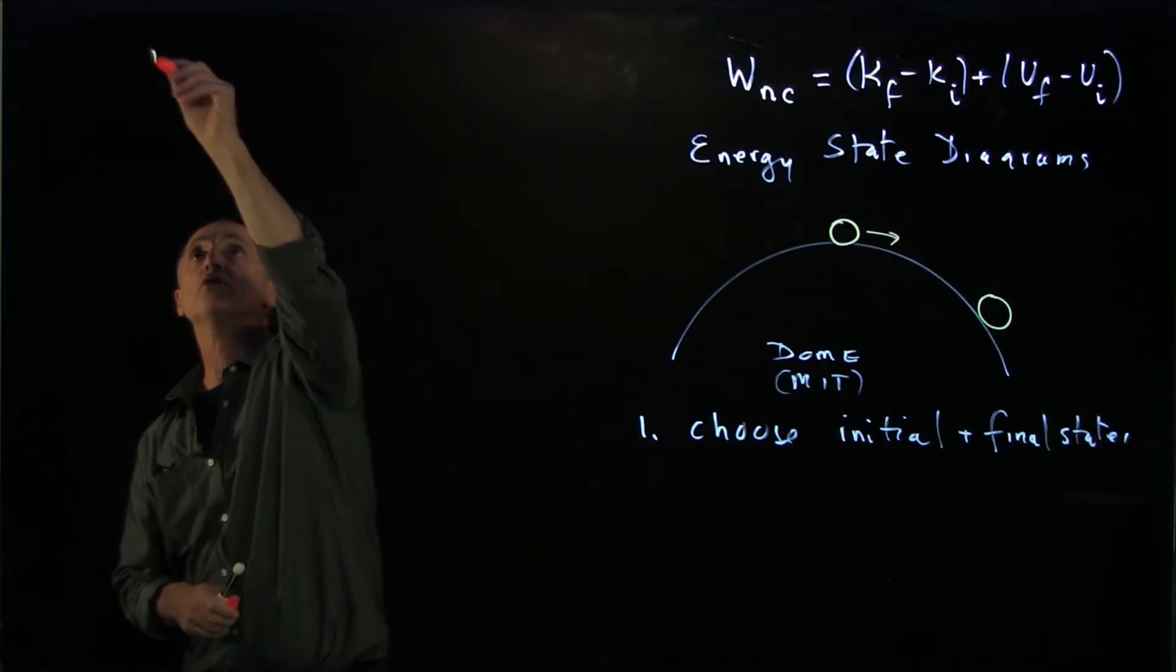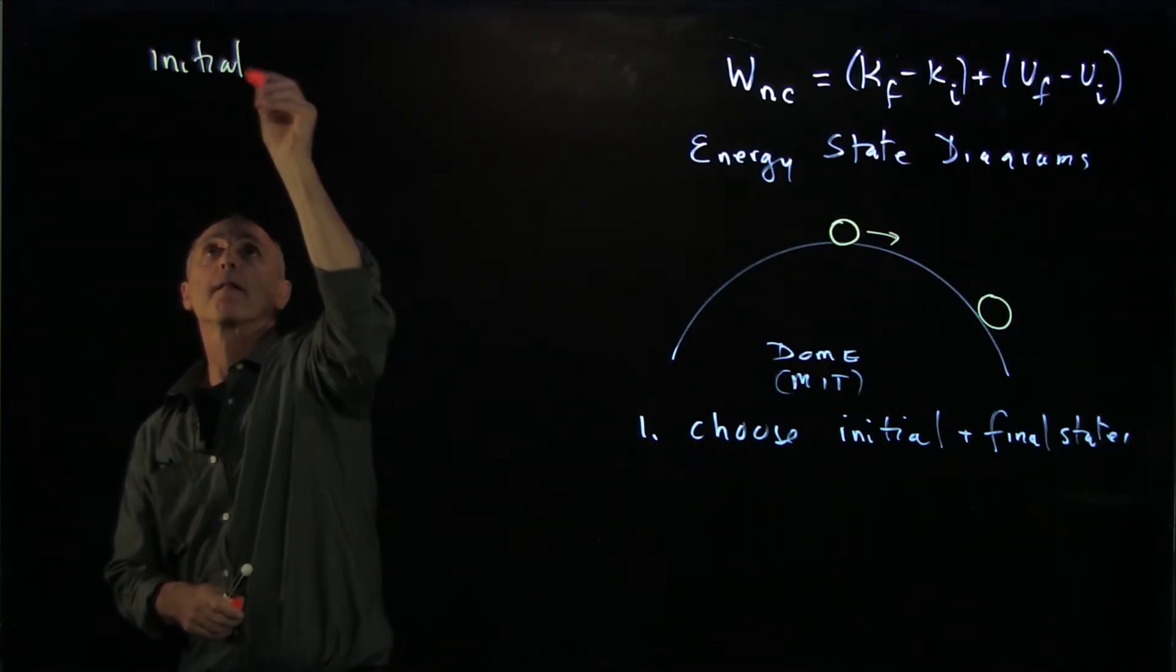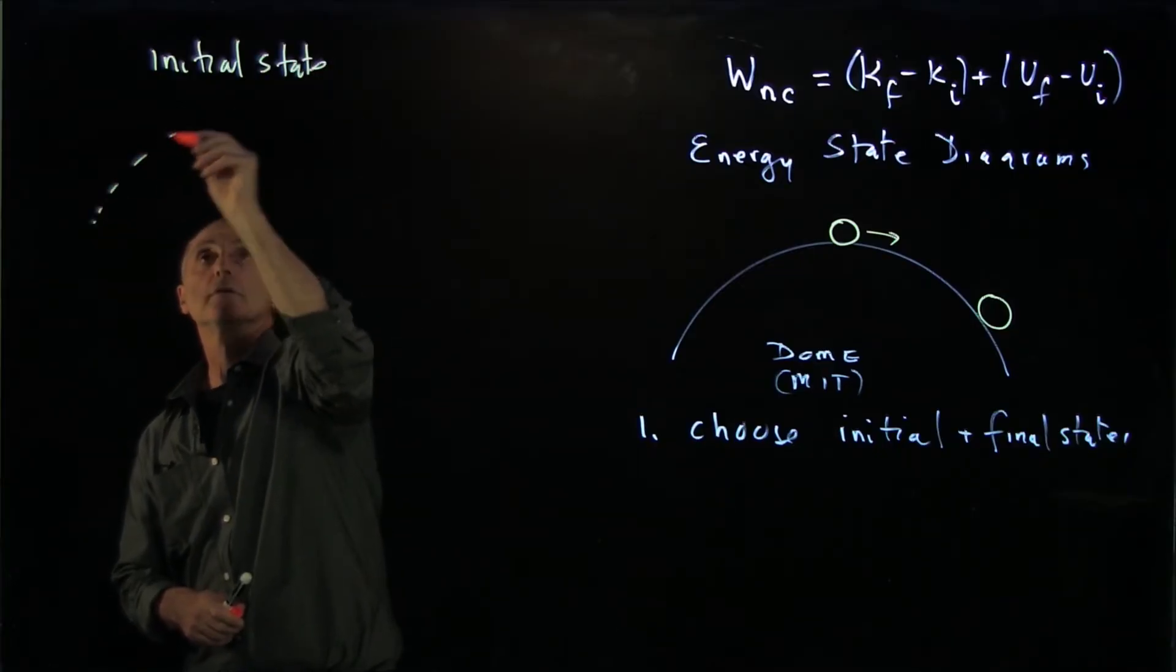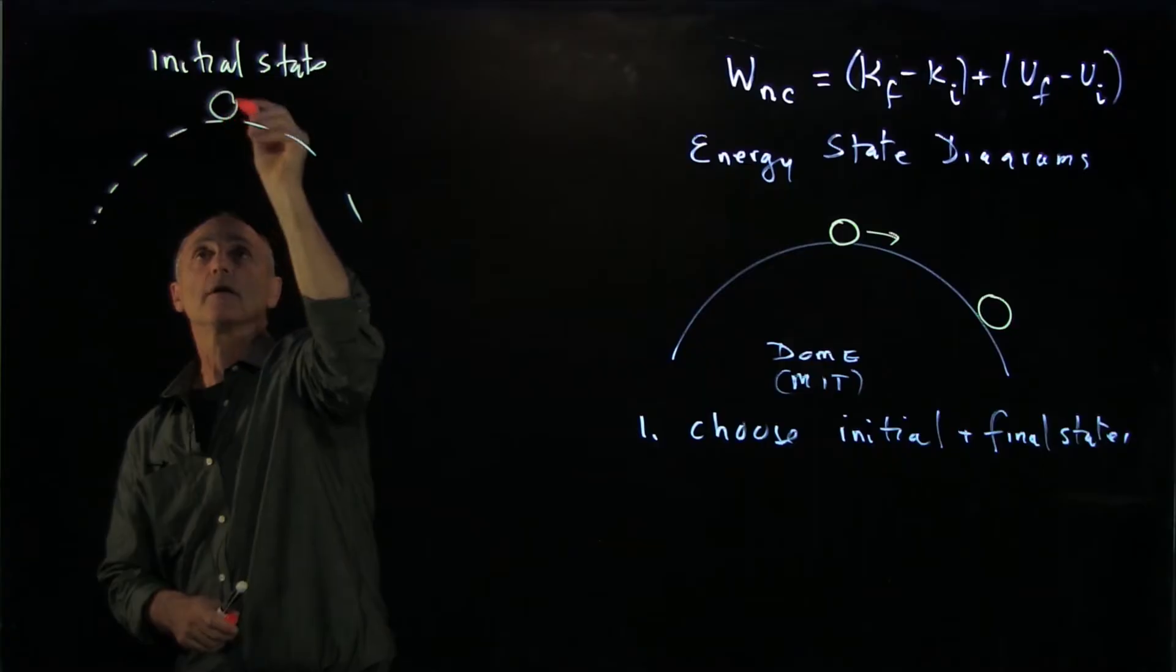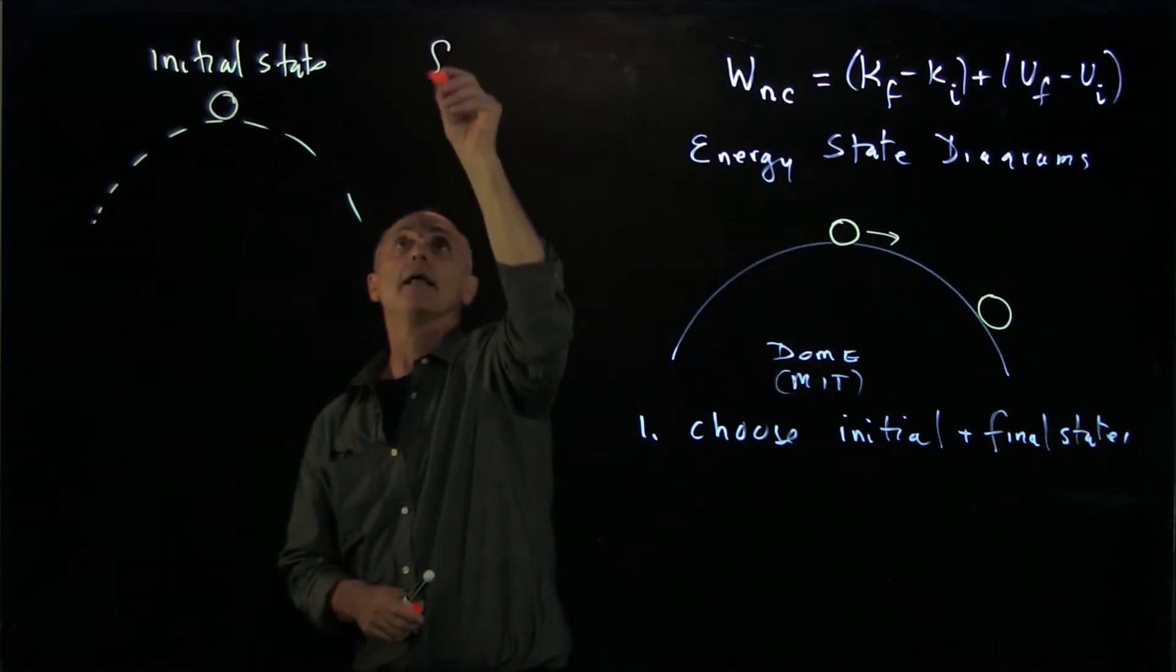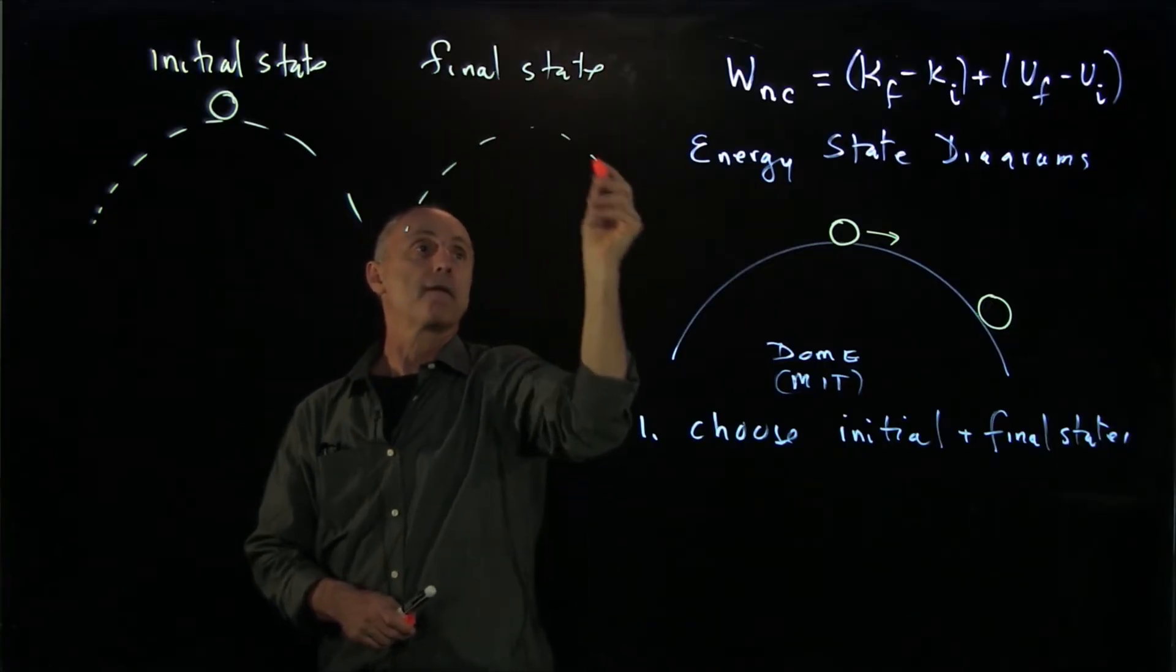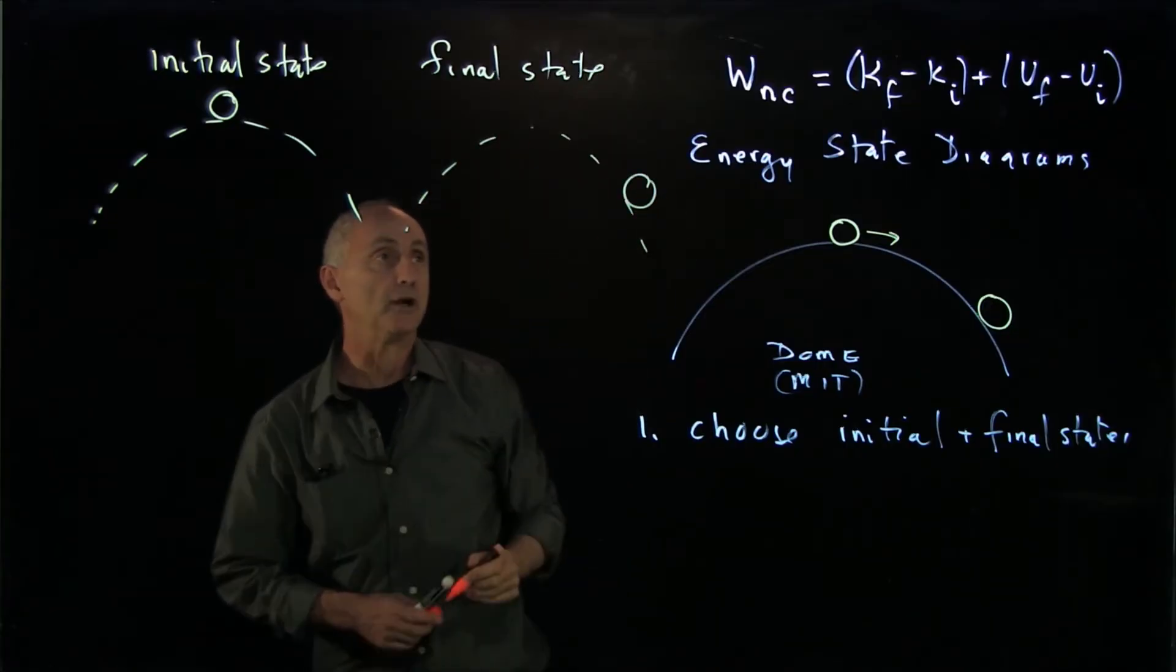So in our dome problem, we would choose our initial state. Let's draw our object at the top. And in our final state, separately, let's draw the object over here.